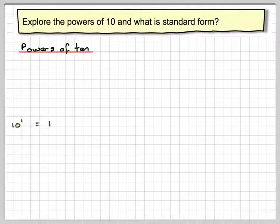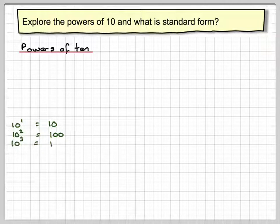The powers of 10. Let's start with 10 to the 1. We know that 10 to the 1 equals 10. Working downwards, 10 squared is 100, 10 cubed is 1000.